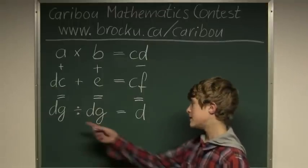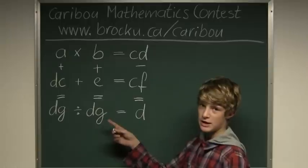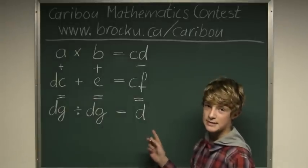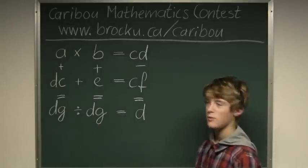One special equation will be DG divided by DG equals D, and that means D has to equal 1 because a number divided by itself is 1.